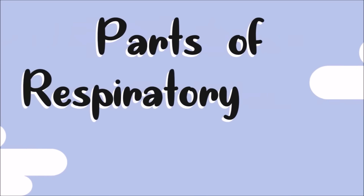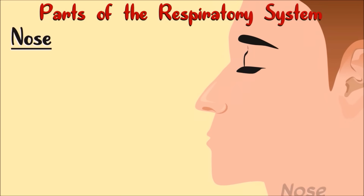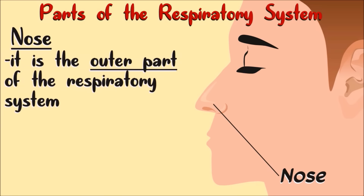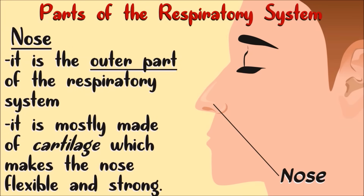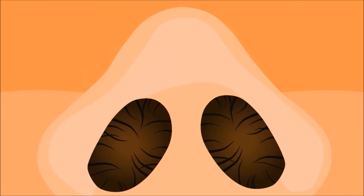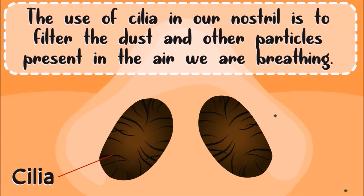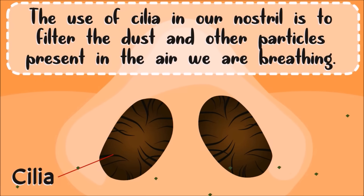Now let us identify the different parts of the respiratory system. This is the nose — it is the outer part of our respiratory system. It is mostly made up of cartilage, which makes the nose flexible and strong. The nose has two openings called nostrils. The nostrils lead the airway to the nasal cavity and are lined with small hairs called cilia. The cilia in our nostrils filter out dust and other particles present in the air we are breathing.